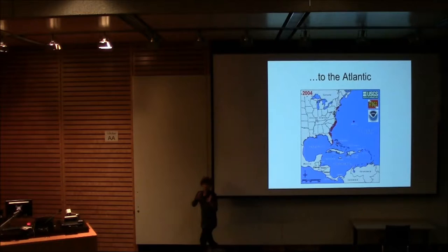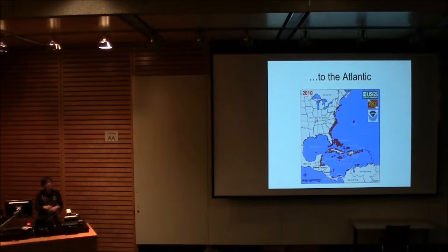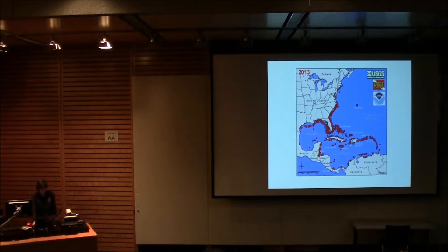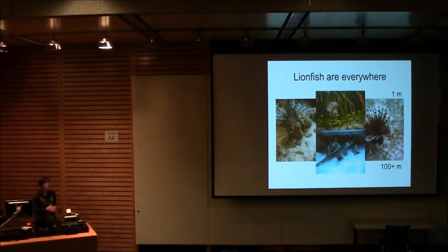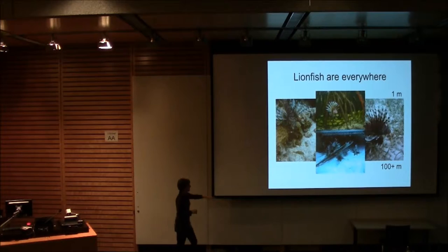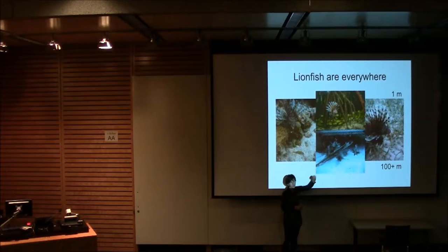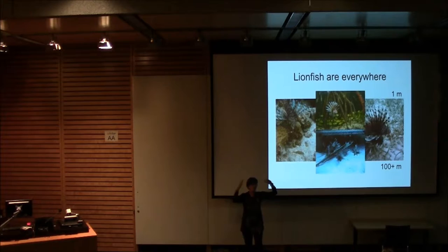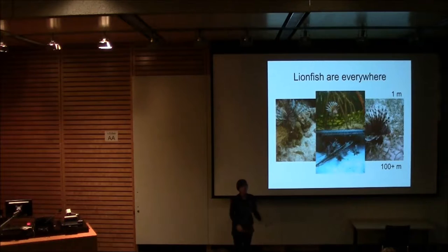Since then, they've basically been busy filling all the gaps in distribution. About six months ago, they were found on the coast of Brazil. They managed to cross the Orinoco barrier, and undoubtedly they're going to make their way down that coast as well. So they are everywhere. They're everywhere geographically like this. They're also everywhere in terms of habitats. So we find them on coral reefs, we find them in mangroves, we find them in seagrass. We find them basically in any kind of habitat where we've thrown something solid that gives structure.